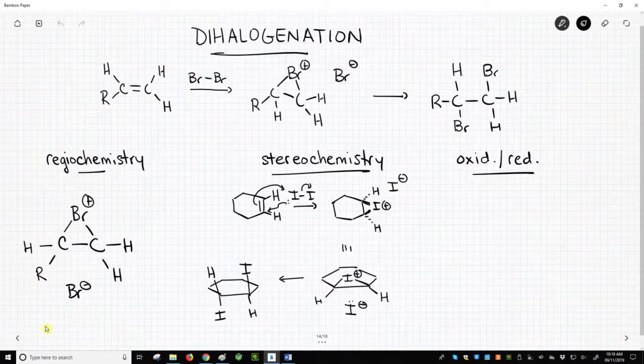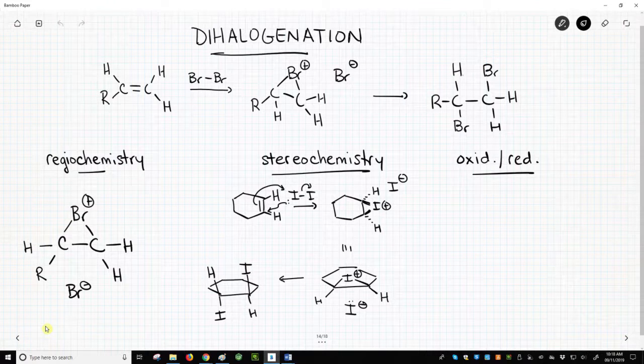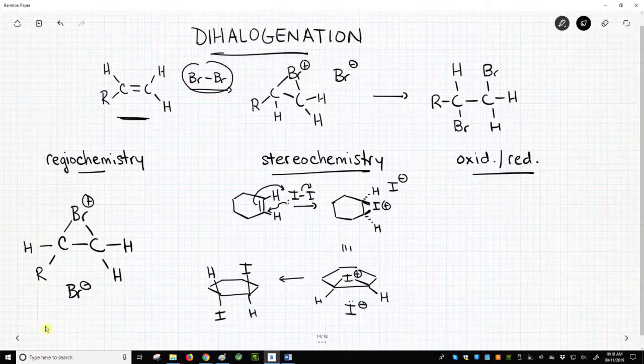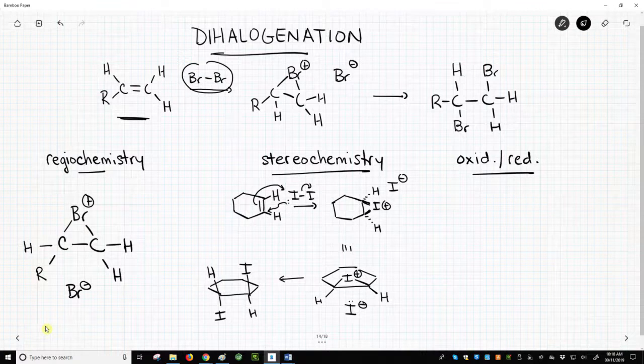The full reaction is already shown, but we will need to provide the mechanism. Halogenations start with an alkene. Our reagent is Br2. Halogenations can involve I2, Br2, or Cl2.